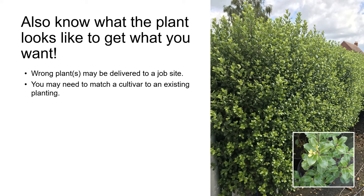Another real-life situation where it helps to know what the plant looks like is if you're trying to match an existing planting. For example, let's say you're doing maintenance on a hedge that consists of the New Zealand native shrub Pittosporum tenuifolium, and you need to replace one of the plants because it's died. You find when you look this plant up that there are several cultivars of Pittosporum tenuifolium available in the nursery trade, plus four other commonly available Pittosporum species: Pittosporum eugenoides, Pittosporum undulatum, and Pittosporum tobira. It could look really strange if you replace the dead plant with the wrong cultivar or even the wrong species, so make sure you know and use the full botanical name and know what the plant should look like.